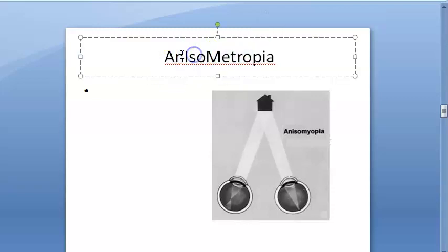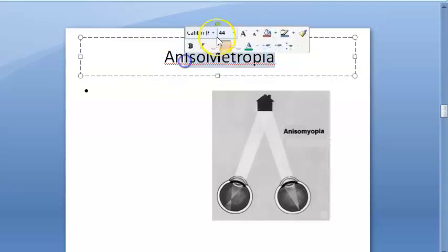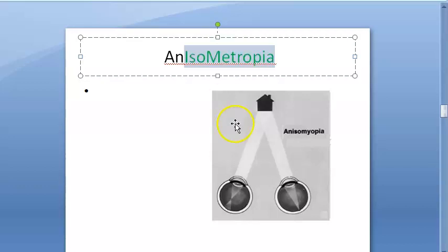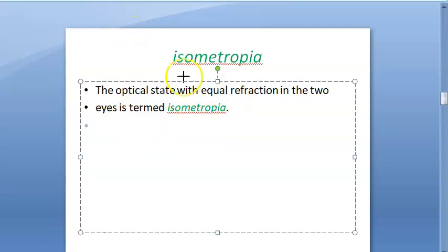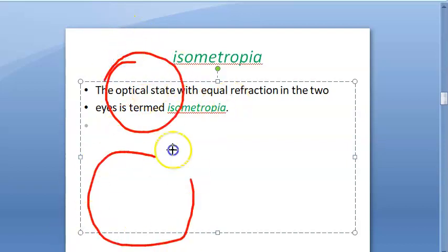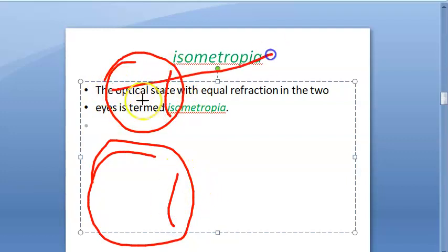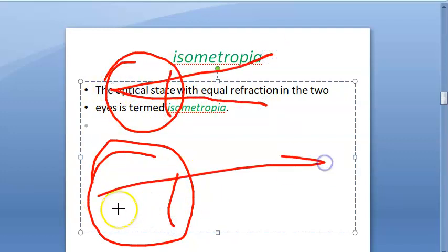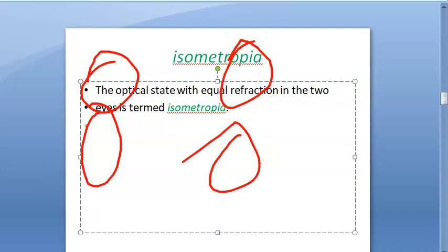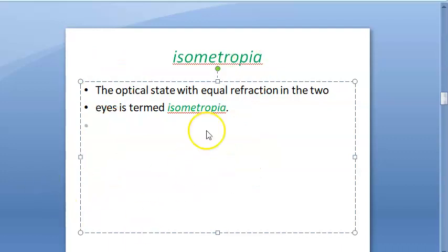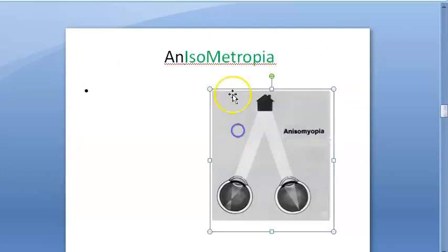In this video we want to understand what anisometropia is. First, what is isometropia? Isometropia is where both eyes have equal refractive power. So one eye forms an image on the retina, and this eye also forms an image on the retina — or both have myopia, or both have hypermetropia.